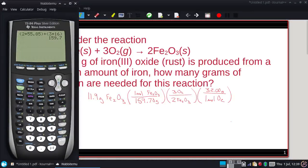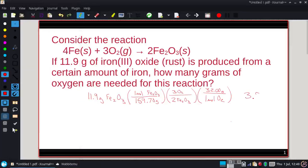Let's see what we get if we do this then. So I have 11.9 divided by the molecular weight, which I have right there, times 3 divided by 2 times 32. And I get the mass should be 3.58 grams. That should be our answer.